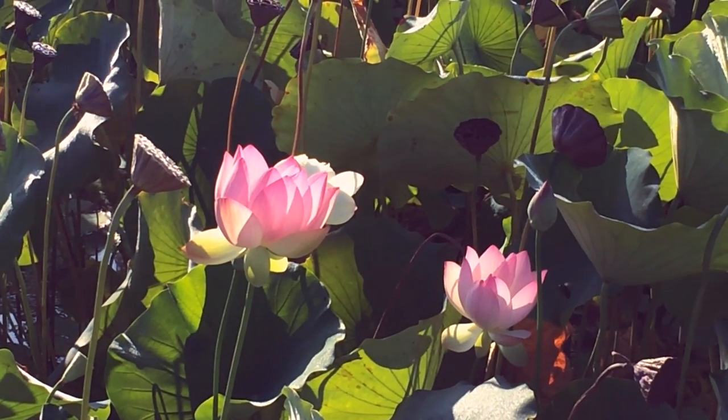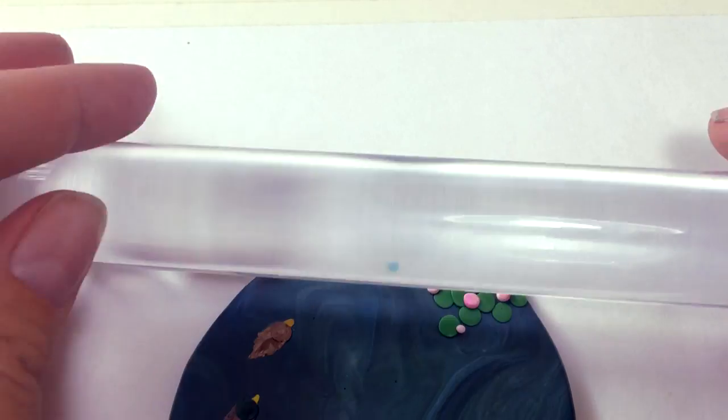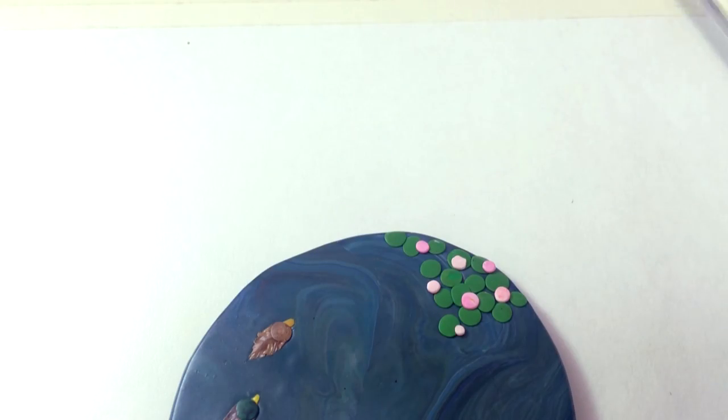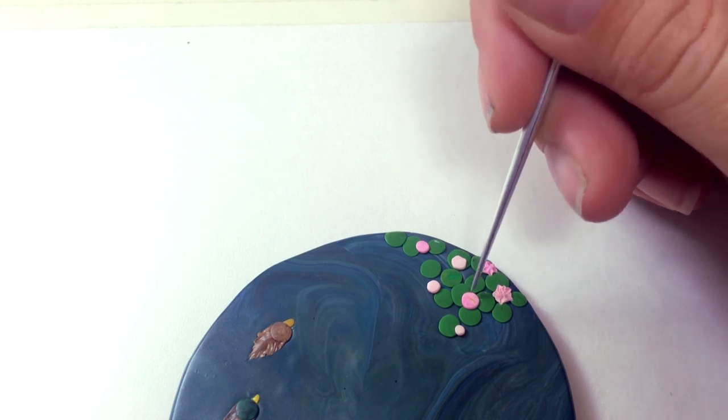The lotuses are great for attracting bees and other types of pollinators. All right, then I flatten out the pink dots using the rolling pin, and then I use the pokey stick to carve out the shape of the petals.